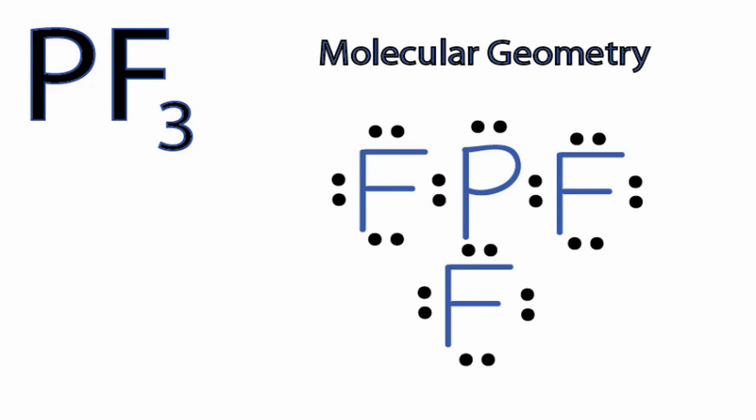To find the molecular geometry for PF3, we'll first look at the Lewis structure. You can see there are three fluorine atoms around that central phosphorus. Very importantly though, we also have a lone pair of electrons there.